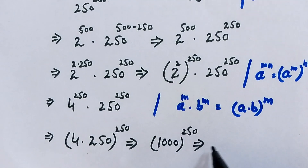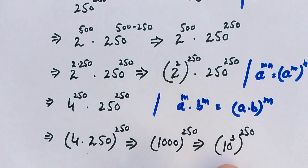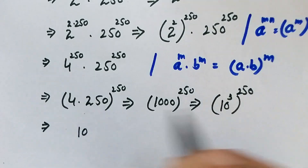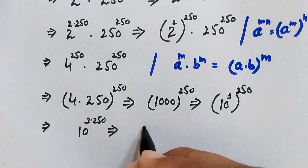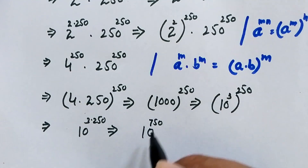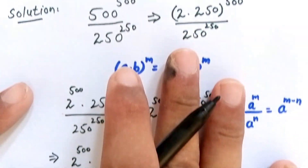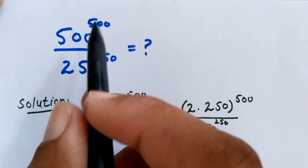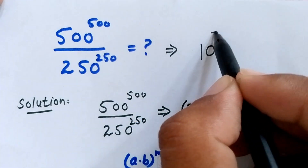We know that 1000 equals 10 to the power of 3, so this becomes (10 to the power of 3) to the whole power of 250. Applying the power rule: 3 times 250 equals 750. So this equals 10 to the power of 750. This is the final simplified answer for 500 to the power of 500 divided by 250 to the power of 250: the answer is 10 to the power of 750.